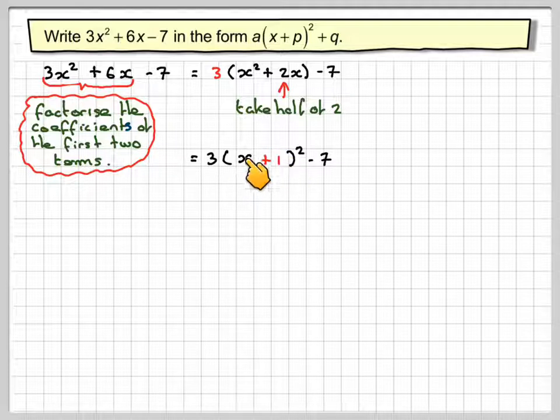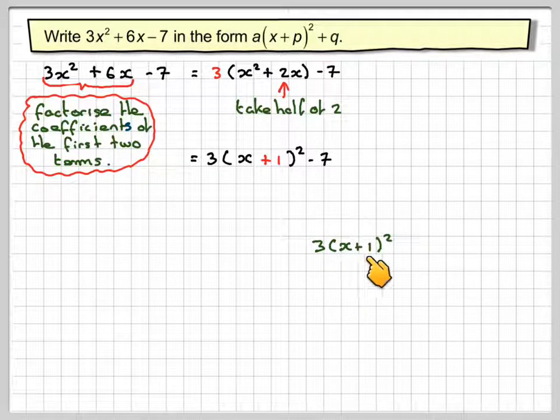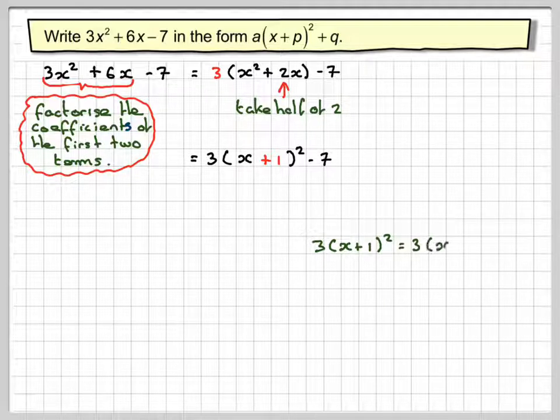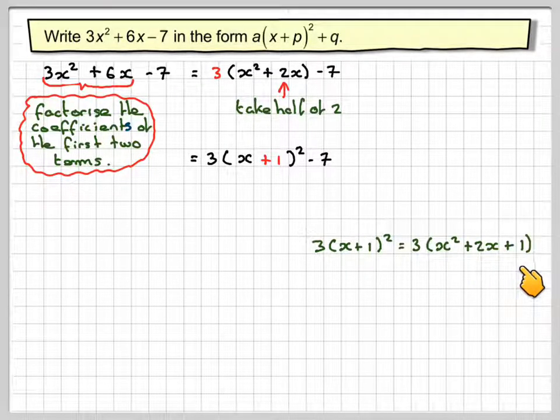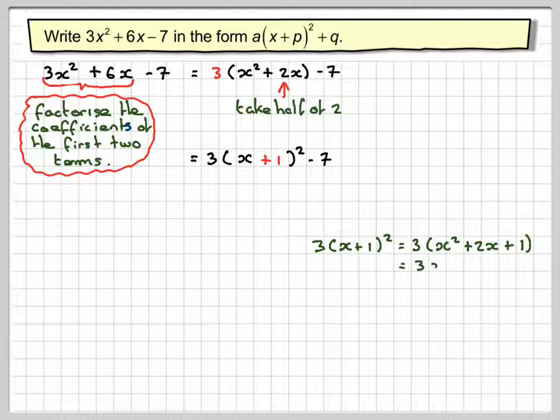Now in doing this process here we've actually added something in. We've changed the meaning of this and what we've got to do is work out what we've added in. So what we could do is do 3 times (x + 1)² and just see what extra we've added in. So expanding (x + 1)², we've got 3(x² + 2x + 1) and then multiplying through by 3.